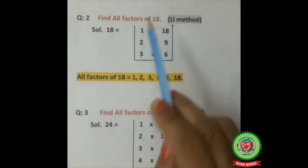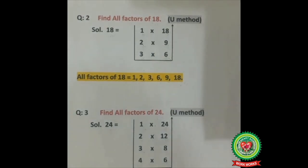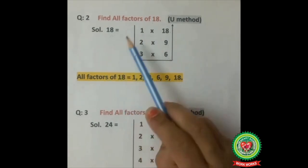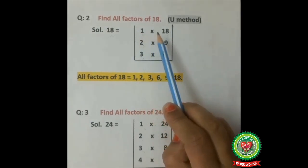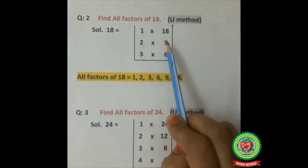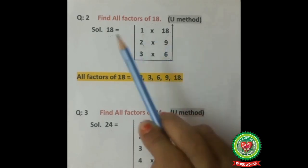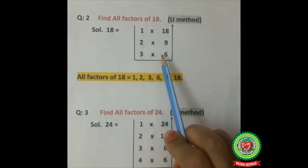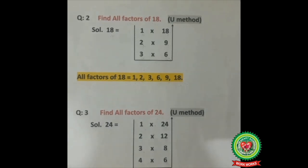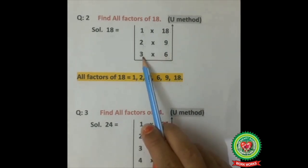Find all factors of 18. Number is 18. Start from 1 because 1 is a factor of every number. Eighteen divisible by 1 at 18, so 1 multiply 18. Eighteen divisible by 2 at 9, so 2 multiply 9. Eighteen divisible by 3 at 6, so 3 multiply 6. Is 18 divisible by 4? No. Is 18 divisible by 5? No. Is 18 divisible by 6? Yes, at 3.